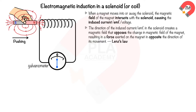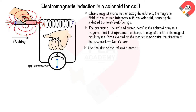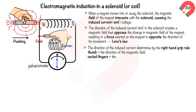This is known as Lenz's Law, which states that the direction of induced EMF in a circuit always opposes the change in the magnetic field that produced it. The left end of the solenoid becomes a north pole when the magnet moves into it, creating a repulsive force that opposes the magnet's motion, and the right end becomes a south pole. The right-hand grip rule determines the direction of the induced current, with the thumb pointing along the magnetic field and the curled fingers indicating the direction of current flow.